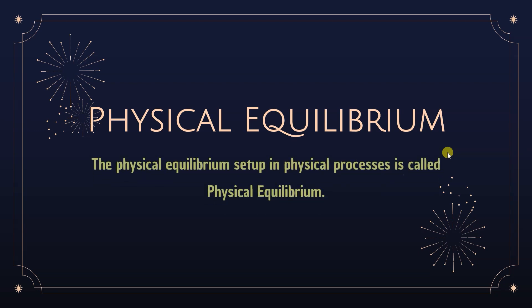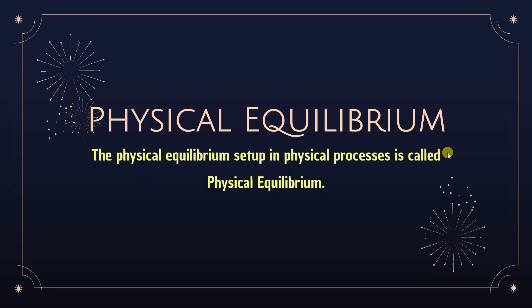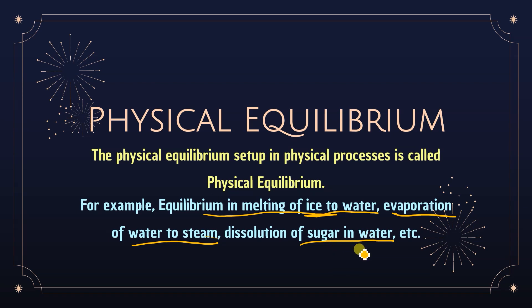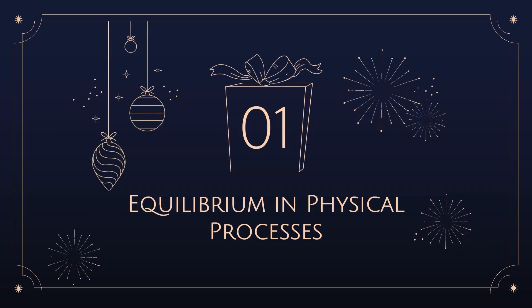Chemical equilibrium is divided into two parts: physical equilibrium and chemical equilibrium. Physical equilibrium is set up in physical processes such as solid to liquid, liquid to gas, or gas to liquid. Examples include the melting of ice to water, evaporation of water to steam, and dissolution of sugar in water. We will study each of these physical equilibria one by one.